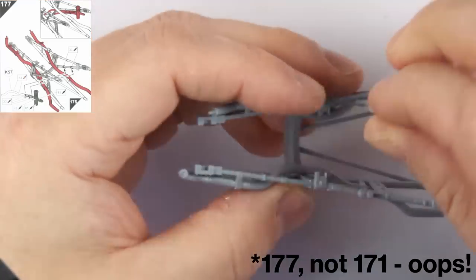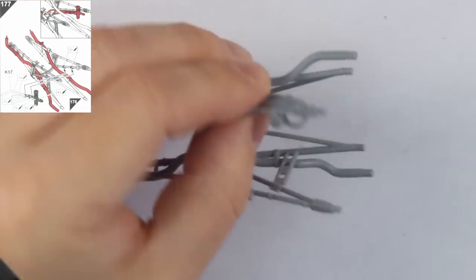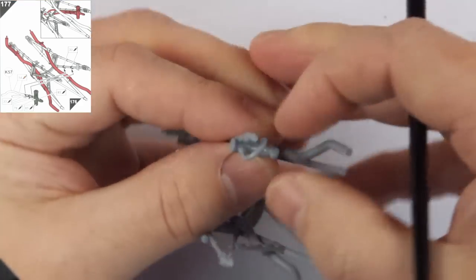177 sees us add additional pipes to the framework, and these also require a bit of threading through to get right. It is possible to put them through backwards, so test fit carefully.